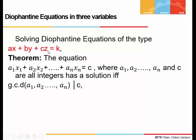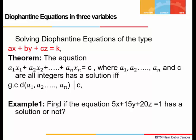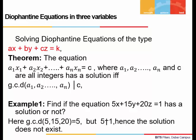We will apply this theorem to our equation ax + by + cz = k. Let's look at one example: is 5x + 15y + 20z = 1 solvable or not? First, we find the gcd of 5, 15, and 20, which is 5. Then we check whether 5 divides the right-hand side. We see 5 does not divide 1, hence such an equation does not have a solution.